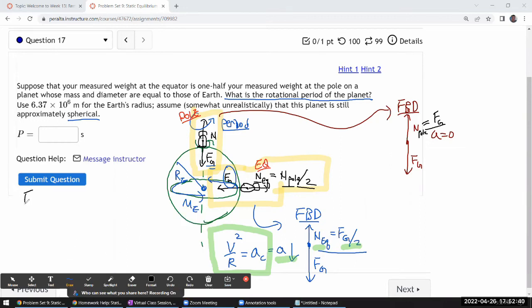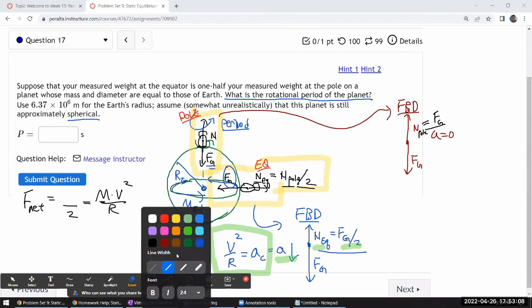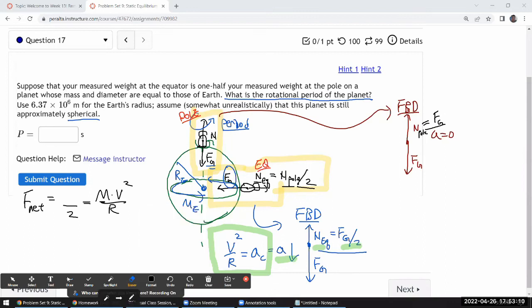So let me just write out some cleaned up version of expressions. My net force, the downward net force, is going to be Fg minus half of Fg, so that's going to be still half of Fg, and that will be the mass of the person times v squared over r.